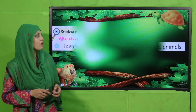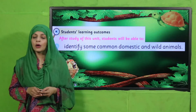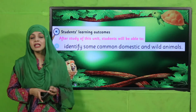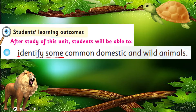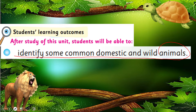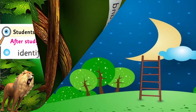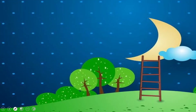Now let's quickly move forward towards today's student learning outcome. In today's lecture, students will be able to identify some common domestic and wild animals. Today you will learn about some common domestic and wild animals — the animals that are around your home.